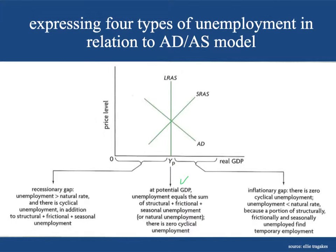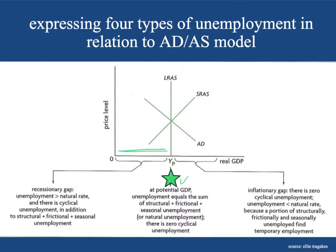Starting right at the long-run aggregate supply curve at potential GDP, unemployment equals the sum of structural, frictional, and seasonal unemployment — the natural rate — and there is zero cyclical unemployment. This is the master spot. If you know that starting point and then an event occurs — a drop in aggregate demand or a supply shock — the short-run aggregate supply curve is going to shift in. Anytime you're working to the left, you're in a recessionary gap where unemployment is greater than the natural rate, and there is cyclical unemployment in addition to structural, frictional, and seasonal unemployment.